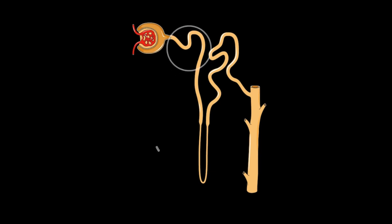Today we will talk about carbonic anhydrase inhibitors. Let's start with the site of action, which is the kidney. Here is a nephron, the functional unit of the kidney. This is the proximal convoluted tubule, which is responsible for reabsorption of approximately 60% to 70% of water and salts and other molecules. Let's talk about the mechanism of action.